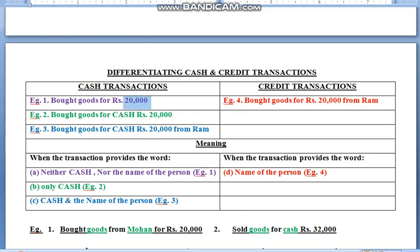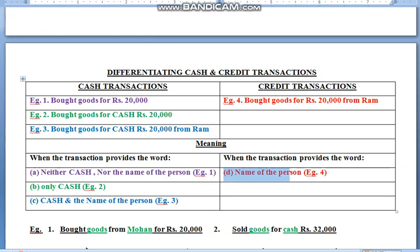One thing you need to pay more attention to: the amount which is mentioned in the transaction is no proof, no evidence, no identity to prove that it is a cash transaction. The amount is no proof that the transaction was performed in cash or in credit. On the same concept — when the transaction gives you the name of the person only, it is credit. In all other cases — neither cash nor name given, only cash given, or cash and name both given — it is a cash transaction. I hope the concept of cash and credit transactions is quite clear.